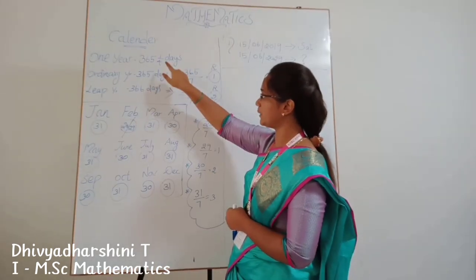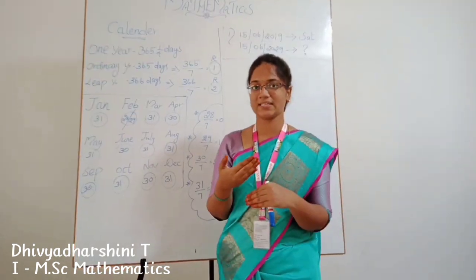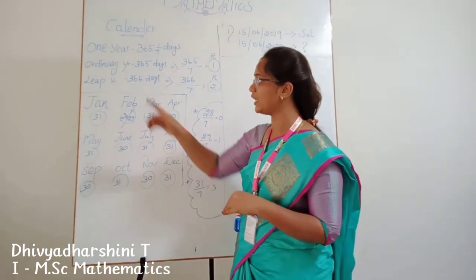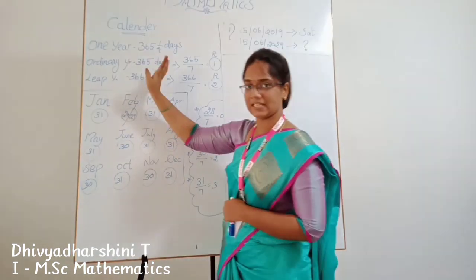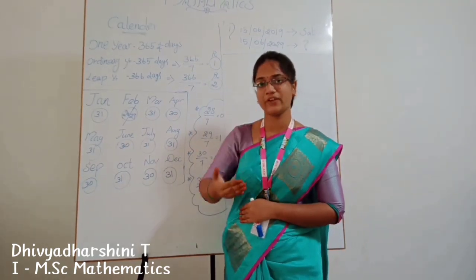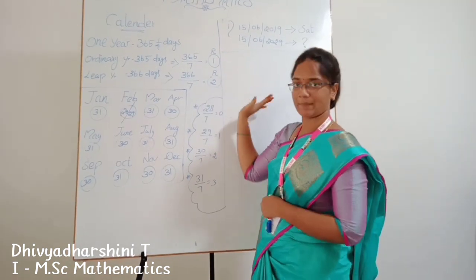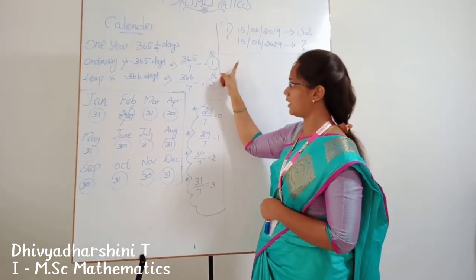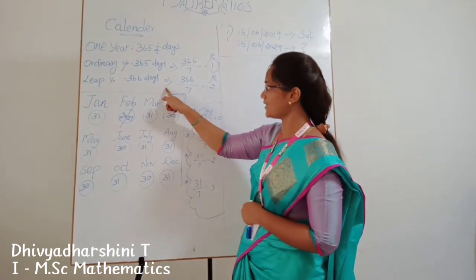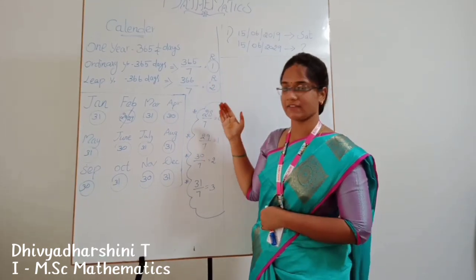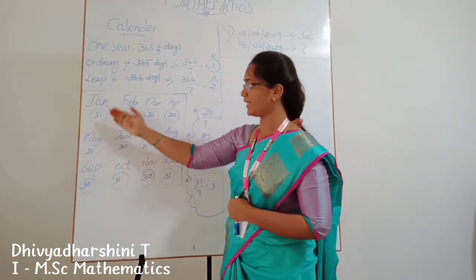For an ordinary year, 365 days divided by 7 gives a remainder of 1. For a leap year, 366 days divided by 7 gives a remainder of 2. These are the first two key values we need.